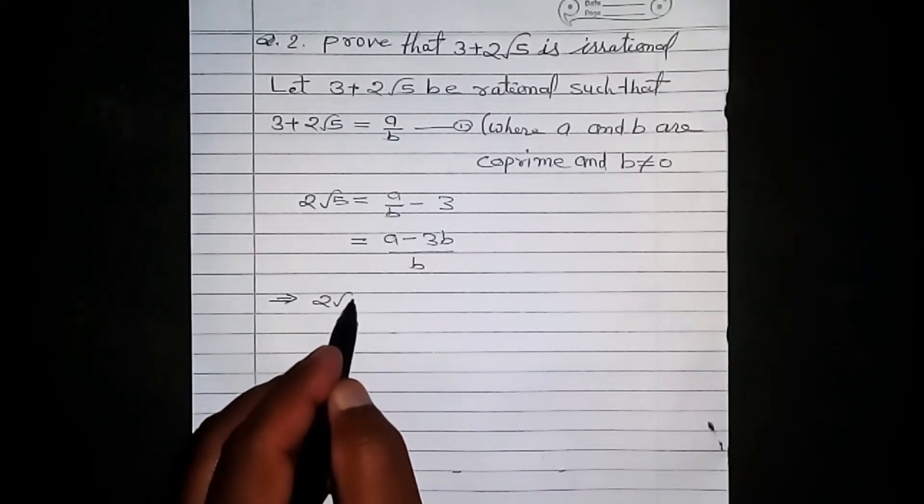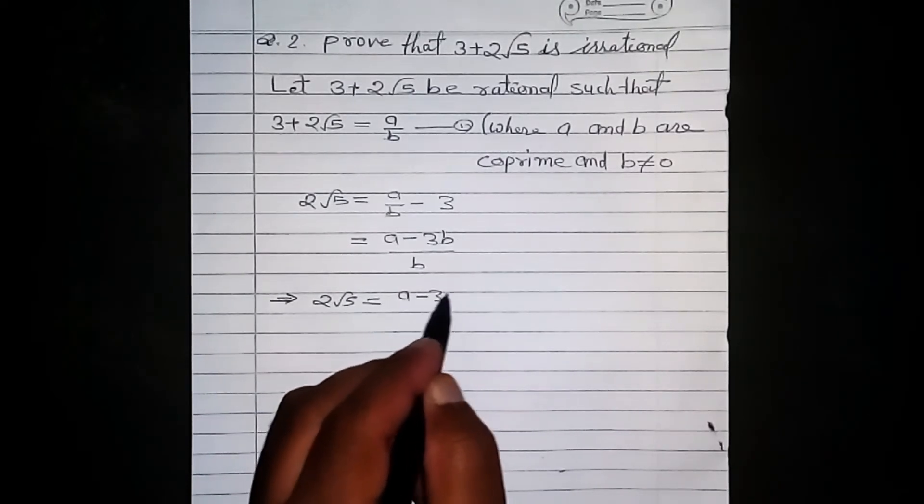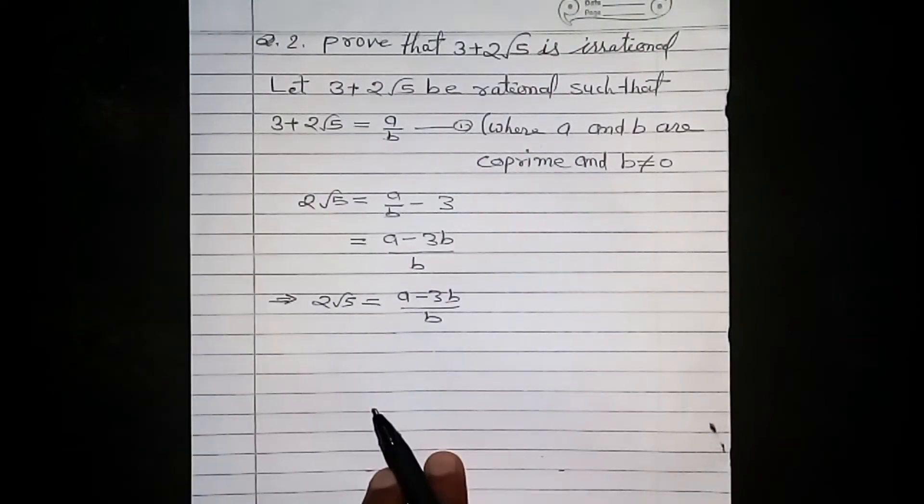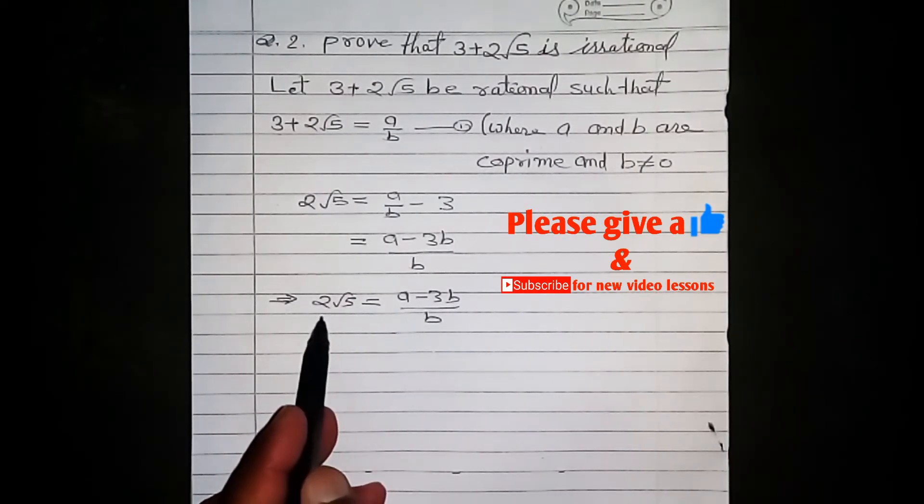Let us divide this equation by 2 to get square root 5 by 2 is equal to a minus 3b by b.